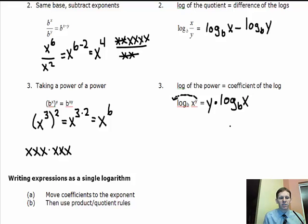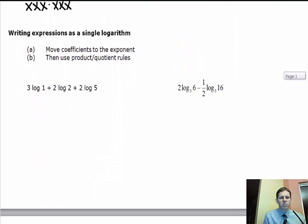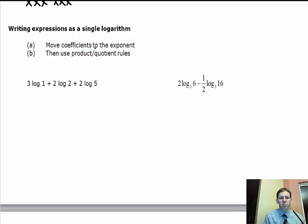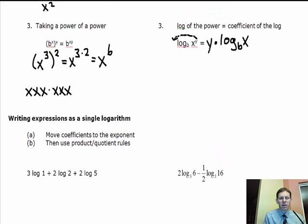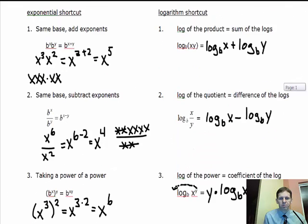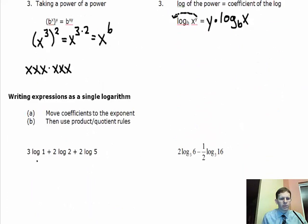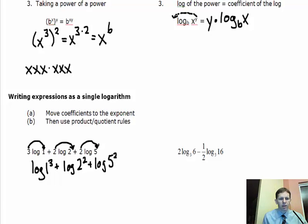We're going to apply these rules when writing expressions as single logarithms. Two strategies: first, move coefficients to the exponent — essentially undoing the rule we just discussed. Then use the product and quotient rules. In the first problem, we move the coefficients 3, 2, and 2 to become exponents, giving us log of one cubed plus log of two squared plus log of five squared. This is our first step toward a single logarithm.